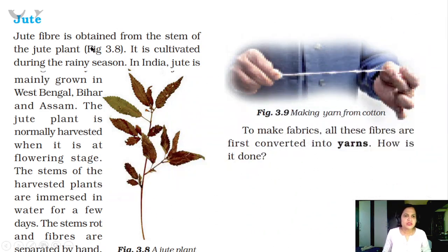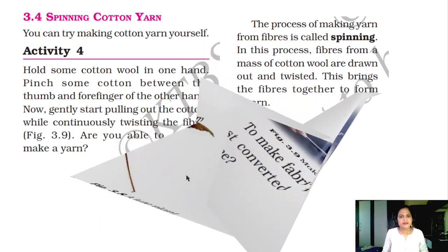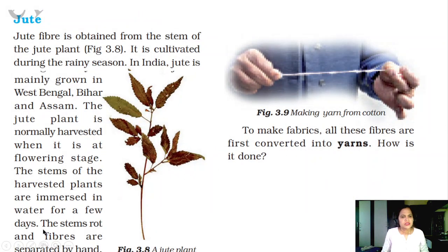Jute: Have you seen jute bags? Nowadays plastic bags are used for rice, but before that, one-quintal jute bags were common. Jute fiber is obtained from the stem of the jute plant. It is cultivated during the rainy season. In India, jute is mainly grown in West Bengal, Bihar and Assam. The jute plant is normally harvested when it is at the flowering stage. The stems of the harvested plants are immersed in water for a few days — the stems rot and fibers are separated by hand.